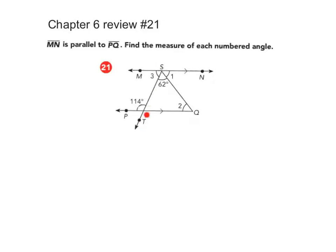So ST is a transversal and SQ is a transversal. Let's look at what I know right now. I can find this angle over here because it's right next to this angle, and together they form a straight line.